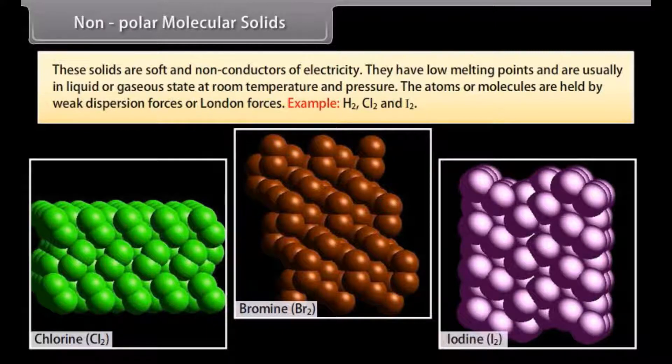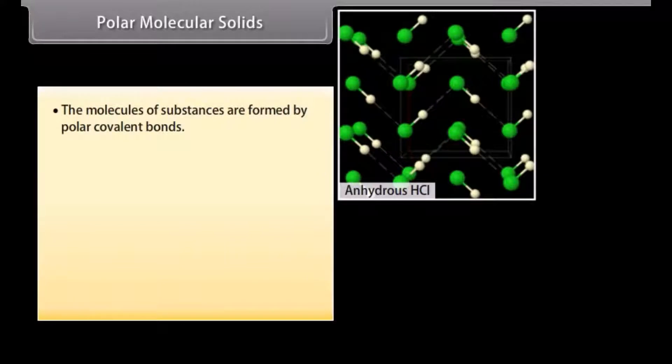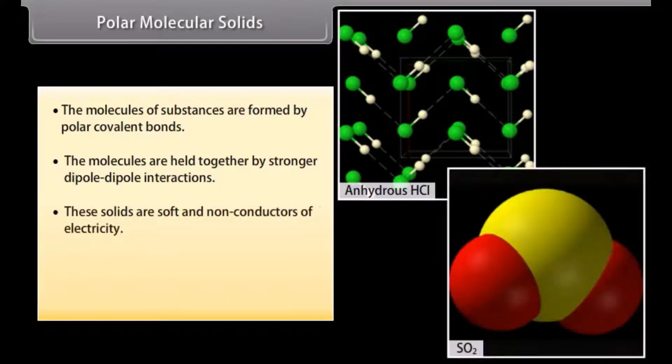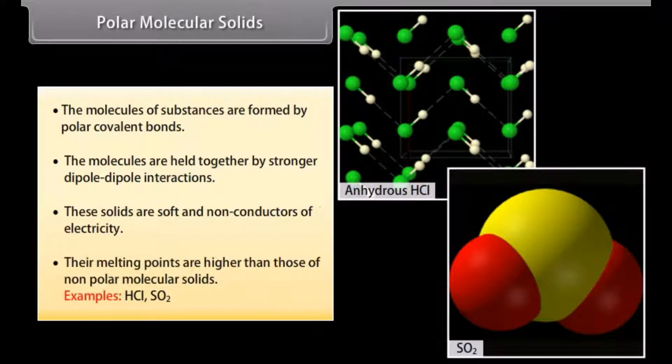Example: H2, Cl2, and I2. Polar molecular solids: the molecules of substances are formed by polar covalent bonds. The molecules are held together by stronger dipole-dipole interactions. These solids are soft and non-conductors of electricity. Their melting points are higher than those of non-polar molecular solids.